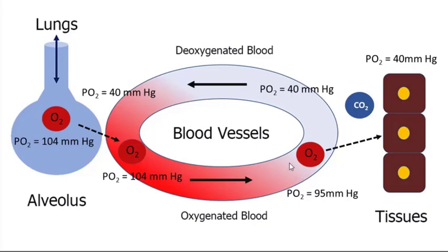In order for oxygen to move from the blood into the tissues, we have to have another partial pressure gradient — and we do. The PO2 of the tissues and cells is about 40 millimeters of mercury. This means that oxygen can diffuse from the higher PO2 of 95 to the lower PO2 of 40, diffusing into the tissues where it's needed. This lowers the blood PO2 to 40 millimeters of mercury, the same as in the tissues, and the blood travels back to the lungs where the process starts all over again.